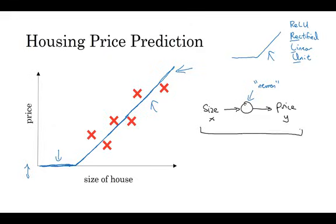So if this is a single neuron neural network, really a tiny little neural network, a larger neural network is then formed by taking many of these single neurons and stacking them together. So if you think of this neuron as being like a single Lego brick, you then get a bigger neural network by stacking together many of these Lego bricks. Let's see an example.